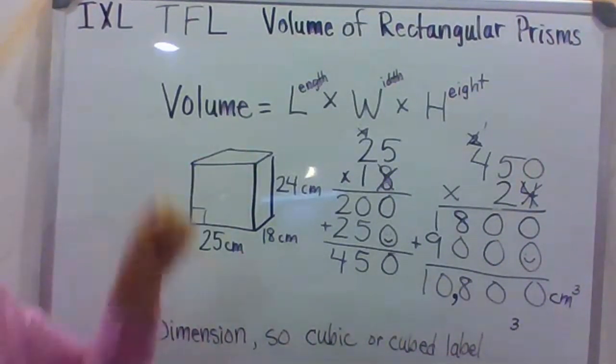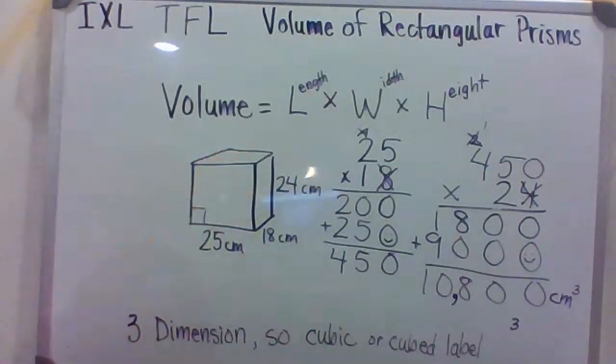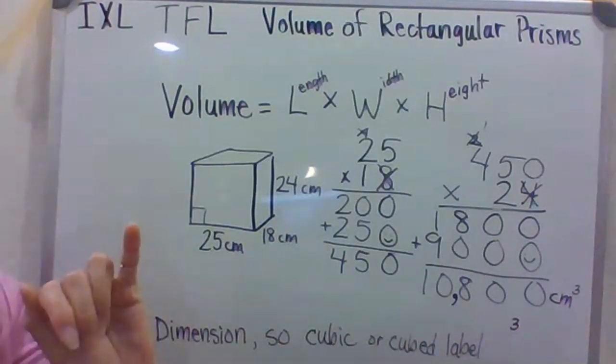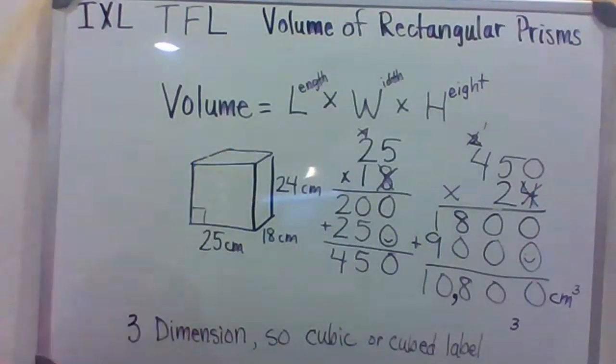So, again, volume is the capacity that can go inside of that. So, 10,800 little tiny centimeter cubes could fill up this container.